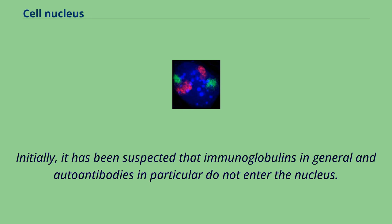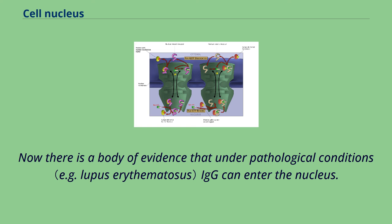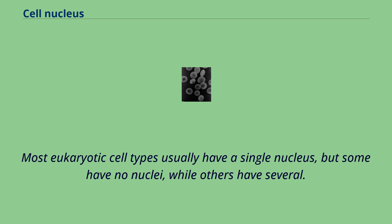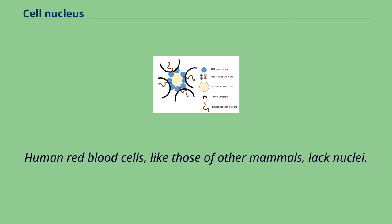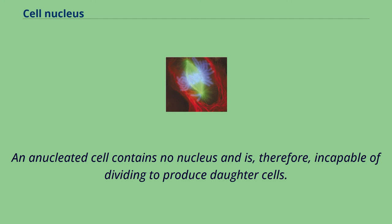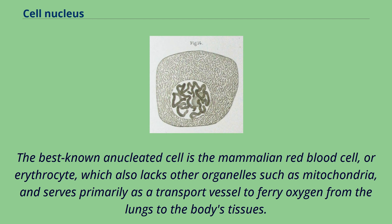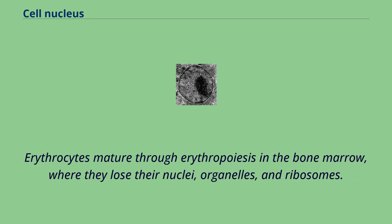Most eukaryotic cell types usually have a single nucleus, but some have no nuclei while others have several. This can result from normal development, as in the maturation of mammalian red blood cells, or from faulty cell division. Human red blood cells, like those of other mammals, lack nuclei as a normal part of the cell's development. An enucleated cell contains no nucleus and is therefore incapable of dividing to produce daughter cells. The best known enucleated cell is the mammalian red blood cell, or erythrocyte, which also lacks other organelles such as mitochondria, and serves primarily as a transport vessel to ferry oxygen from the lungs to the body's tissues. Erythrocytes mature through erythropoiesis in the bone marrow, where they lose their nuclei, organelles, and ribosomes. The nucleus is expelled during differentiation from an erythroblast to a reticulocyte, the immediate precursor of the mature erythrocyte.